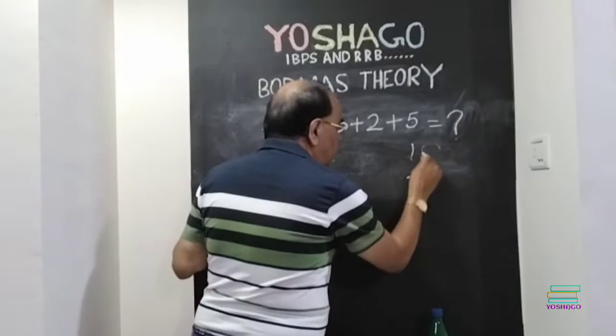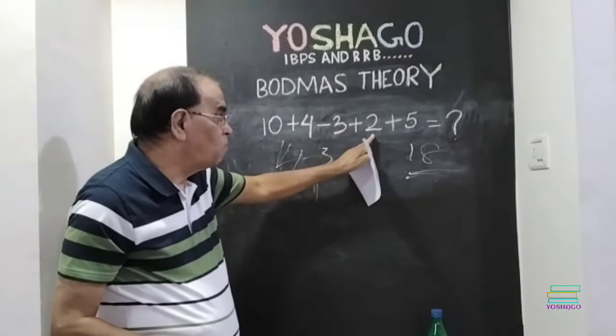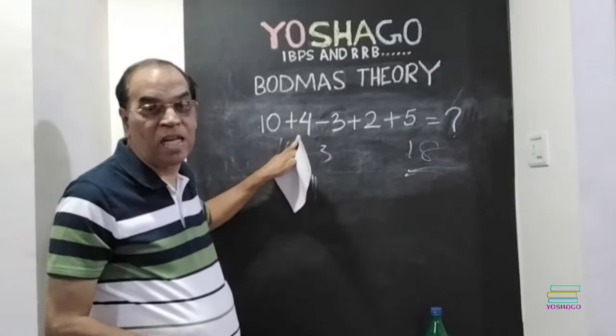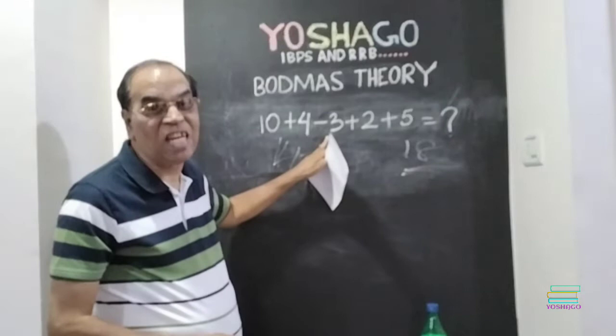So, answer is 18. Or, 2 plus 5, 7. How much is it? 7 plus 4, 11. 11 plus 10, 21. 21 minus 3 is 18.